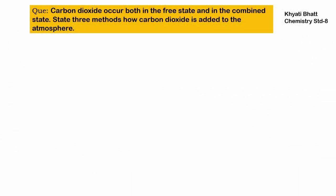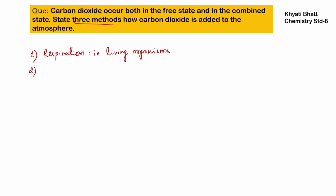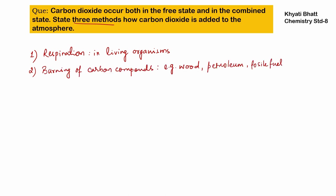Carbon dioxide occurs both in free state and in combined state. Three methods by which carbon dioxide is added to the atmosphere: first, via respiration — living organisms inhale oxygen and exhale carbon dioxide. Second, burning of carbon compounds such as wood, petroleum, and fossil fuels, which produce large amounts of carbon dioxide. Third, decay and decomposition of organic matter — animals, plants, and vegetable matter decompose and liberate carbon dioxide into the atmosphere.